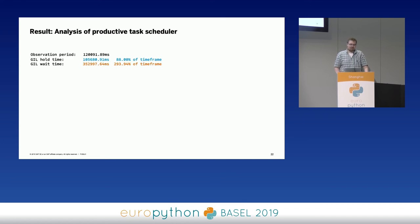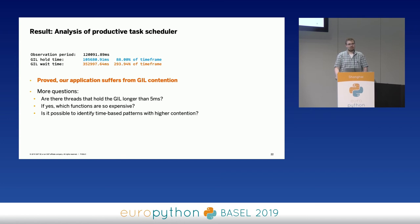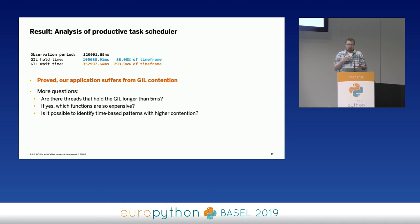Nevertheless, I measured some nice results. Over a two-second observation of our process, I found that we hold the GIL around 88% of the measured timeframe. In the same timeframe, there were so many threads waiting for the GIL that we had an overall wait time on the GIL of nearly 300%. This actually proves, yes, our application really suffers from GIL contention. But it revealed even more questions — are there threads holding the GIL longer than five milliseconds, or are all threads giving up the GIL quickly but we're hitting the thread switching limit?